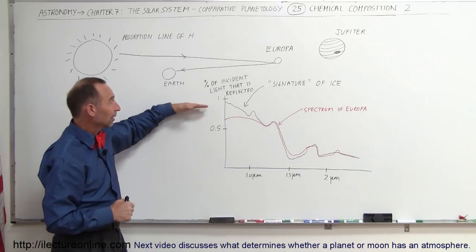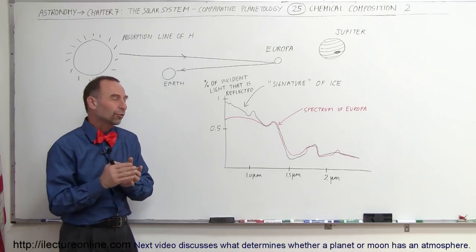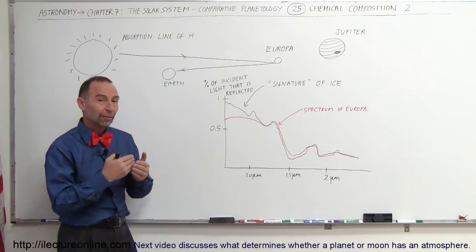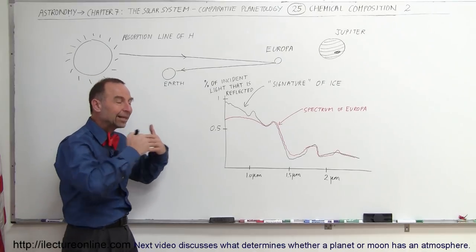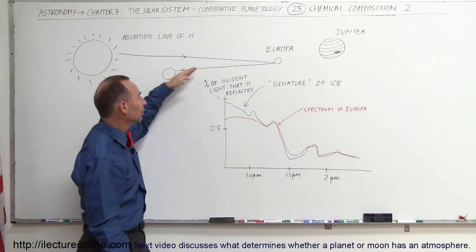Notice another interesting aspect: this vertical axis represents the percentage of the light that is being reflected back from the surface, the incoming sunlight. So here we have the sun coming in, shining on Europa, the light being reflected.